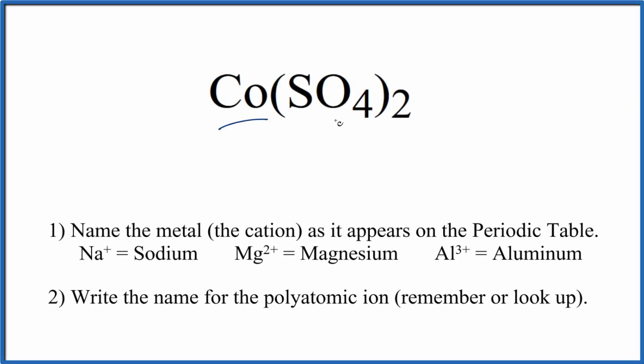To write the name for Co(SO4)2, we first need to realize that cobalt, the Co here, is a transition metal. And then this sulfate, this is a polyatomic ion.